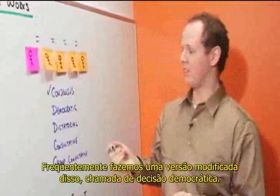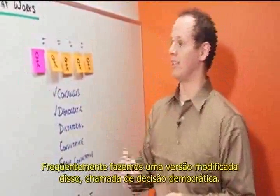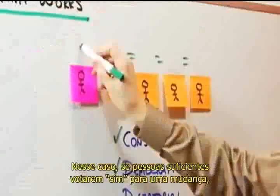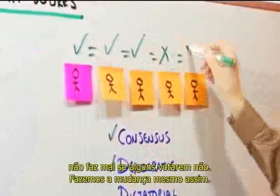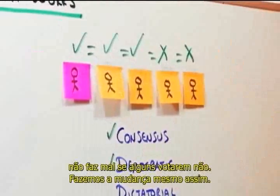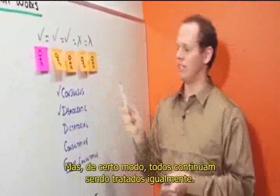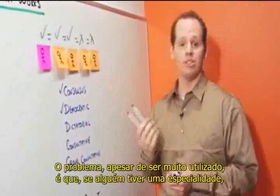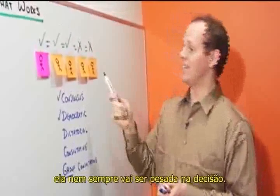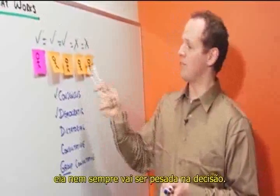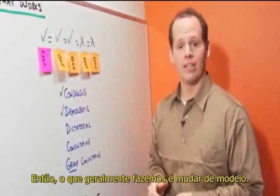Often what we do is a modified version of that called the democratic method of decision-making. In that case, we say if enough people vote yes on a change, it's okay if a few vote no — we still make the change. But in a sense, everyone's still treated as an equal, and the problem with that, although it is used in a lot of boards and groups, is that if people have specific expertise, that expertise doesn't always get weighed.